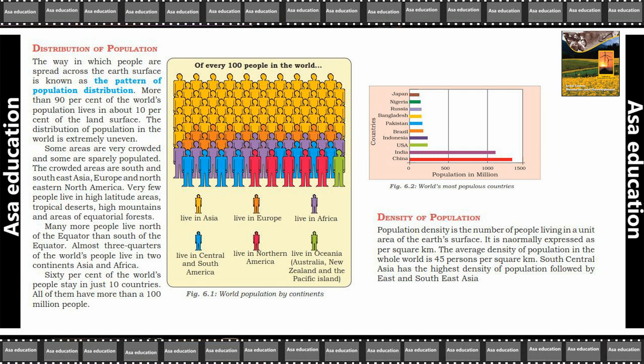Density of Population. Population density is the number of people living in a unit area on the earth's surface. Population density kisai kehti hain — eek quantity of people ya numbers of people joh ki eek particular area mein rehti hain earth surface ke. It is normally expressed as per square kilometer. Is ko generally per square kilometer ke saab se express kiya jata hai.